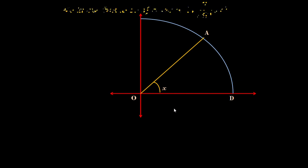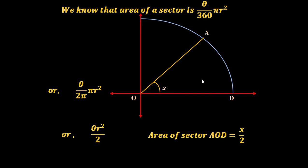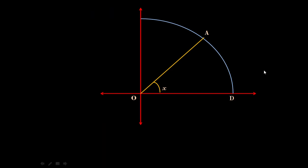Now if we consider the sector AOD formed by this angle X, we know that area of a sector is theta by 360 into pi R squared. Since 360 can also be written as 2 pi, we get theta by 2 pi into pi R squared, which gives theta R squared by 2. Here theta is X and R is 1, so area of sector AOD equals X by 2.